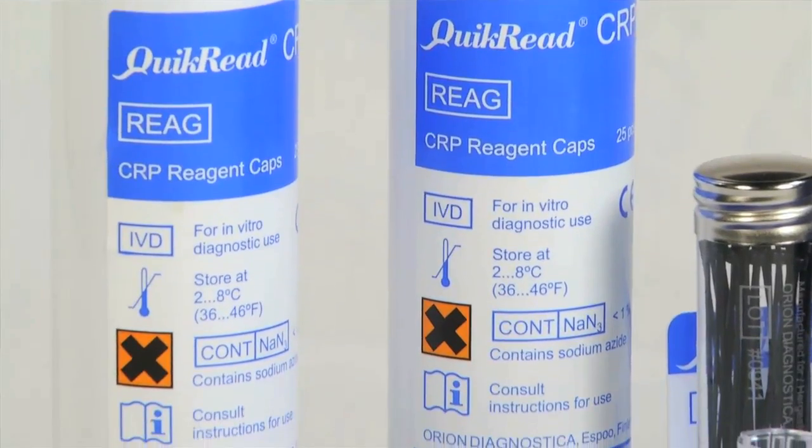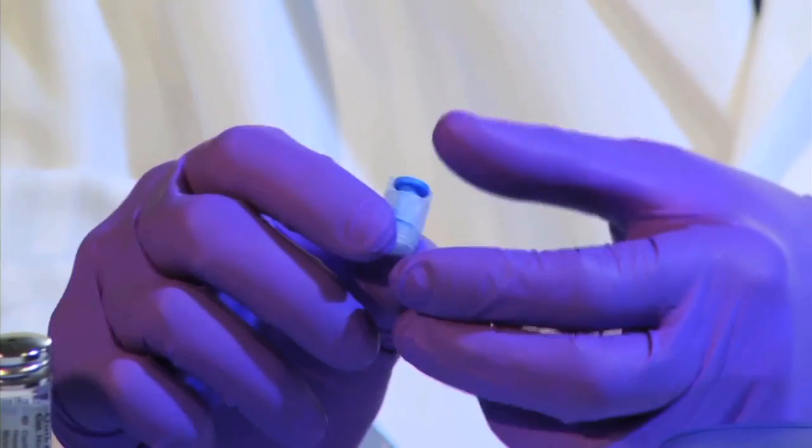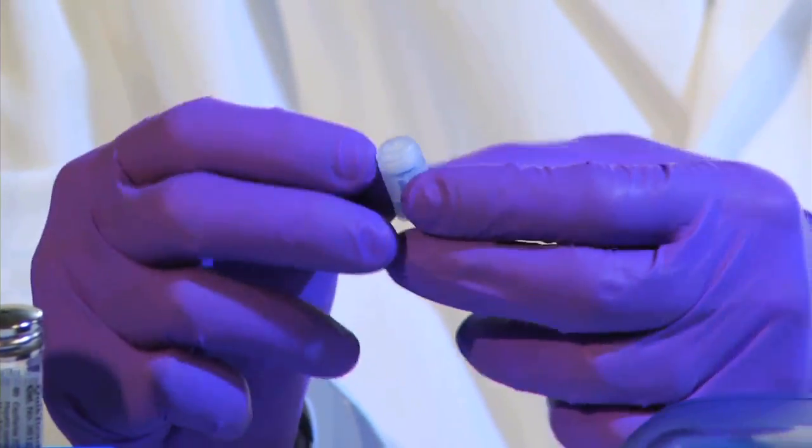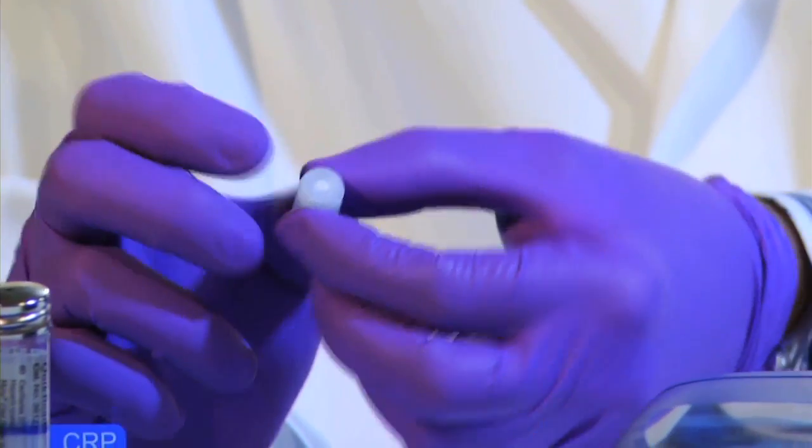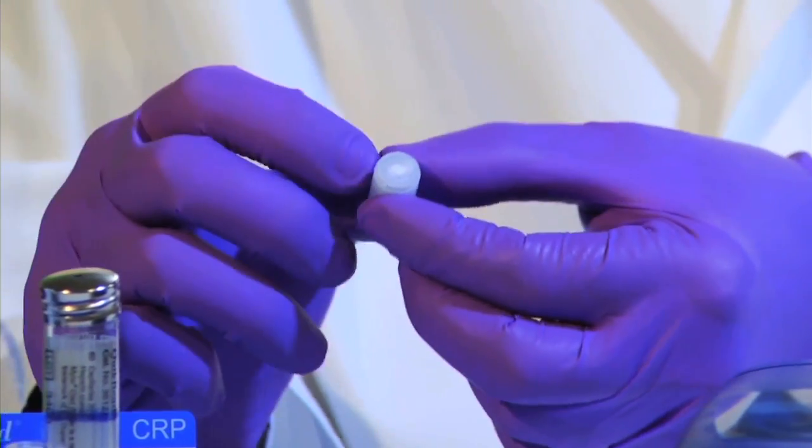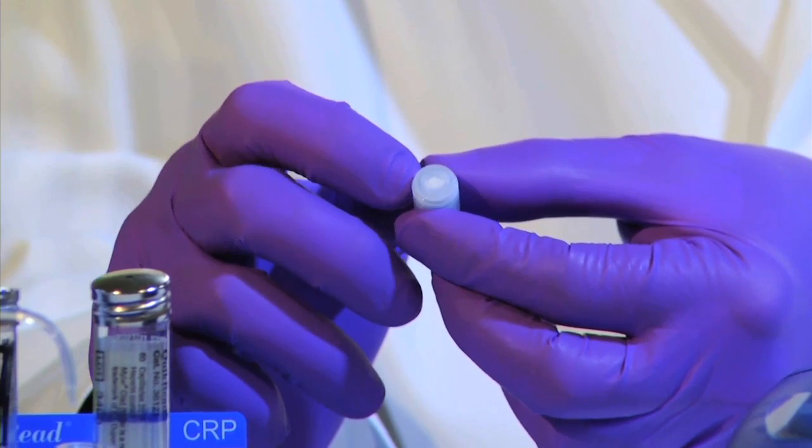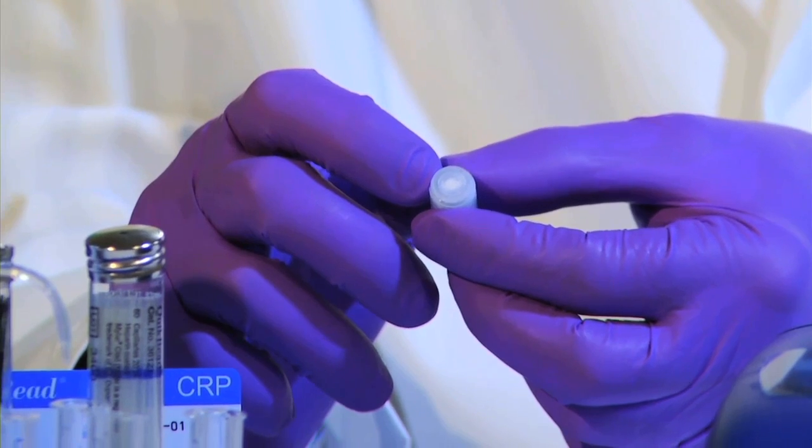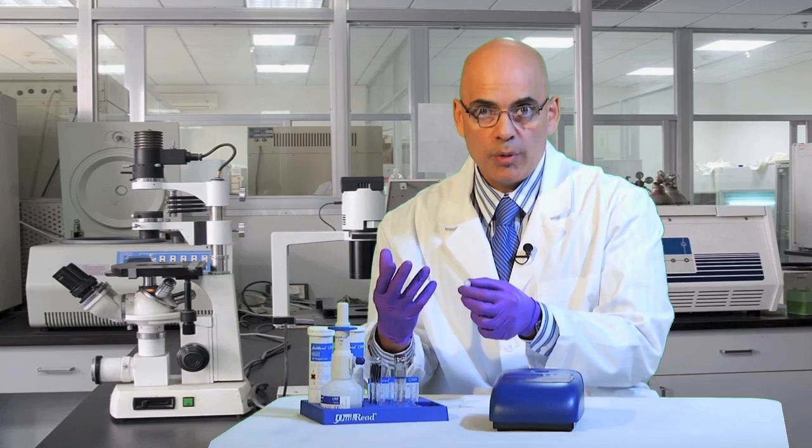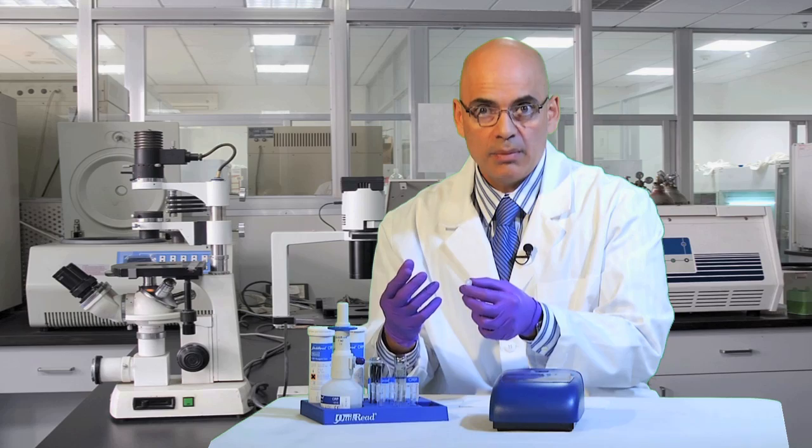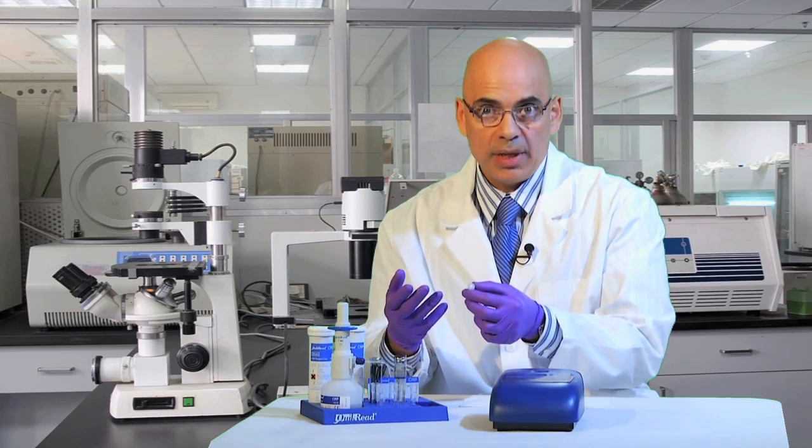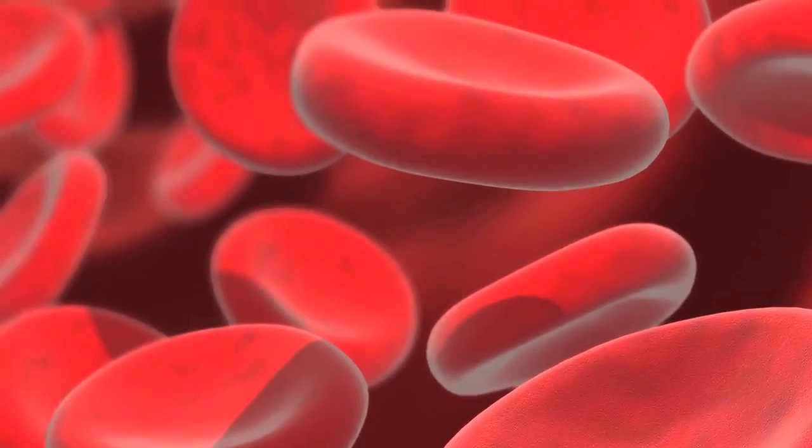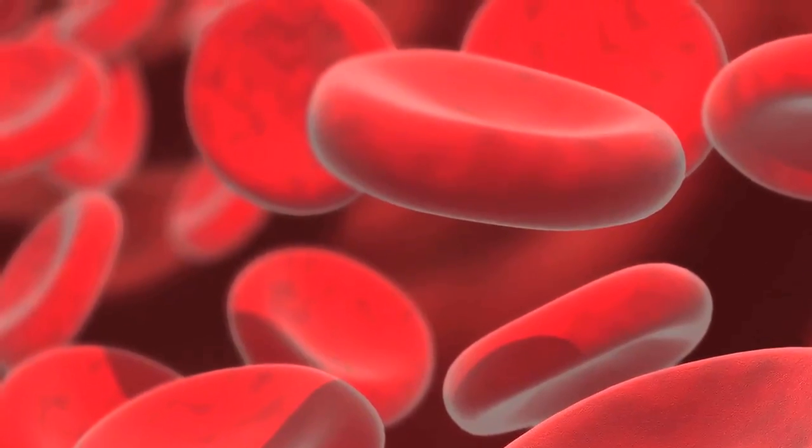This is the CRP reagent cap with a blue plunger on top. On the bottom, you'll be able to see antibody-coated microbeads. These beads, when dropped into the reaction cuvette, will actually bind with the CRP, or C-reactive protein, in the patient's sample, and cause the solution to become turbid. The more turbid the solution becomes, the greater amount of C-reactive protein is in the blood sample, and that will report out in a result that tells the clinician how much CRP is in the bloodstream.